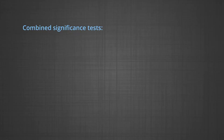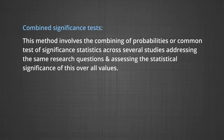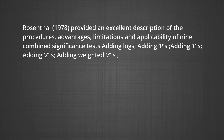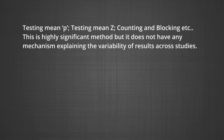The third method is combined significance tests. This method involves combining probabilities or common tests of significance statistics across several studies addressing the same research question and assessing the statistical significance of these overall values. The main importance of combined significance methods is that they help eliminate the low treatment effect of the vote counting method. Rosenthal provided an excellent description of the procedures, advantages, limitations and applicability of nine combined significance tests: adding logs, adding p's, adding t's, adding z's, adding weighted z's, testing mean p, testing mean z, counting, and blocking.